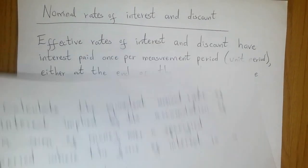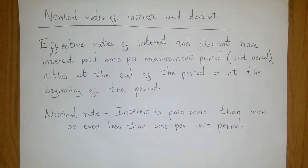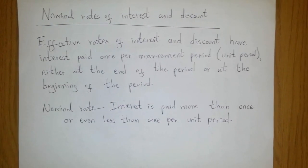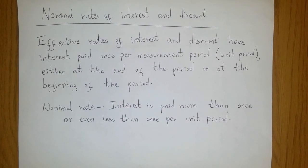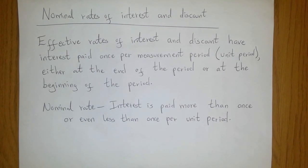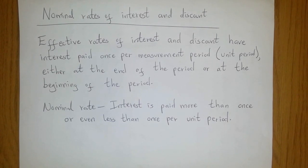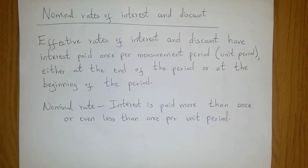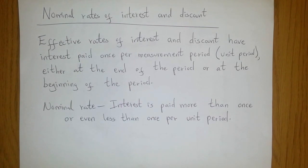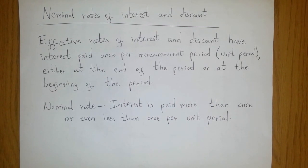Let us go into nominal rates of interest and discount. Effective rates of interest and discount have interest paid once per measurement period — the measurement period is called the unit period — either at the end of the period or at the beginning of the period. In the case of nominal rates, the interest is paid more than once, or even less than once, per unit period.